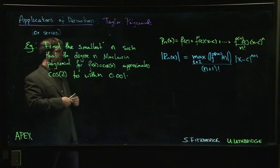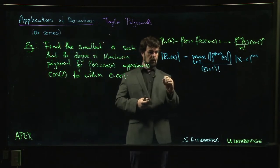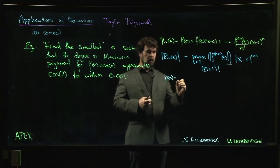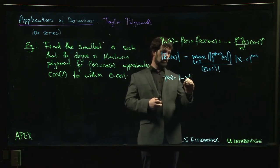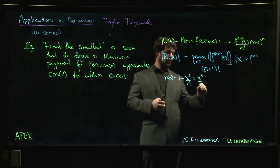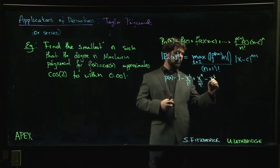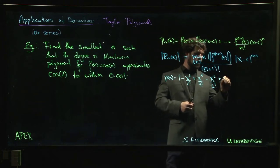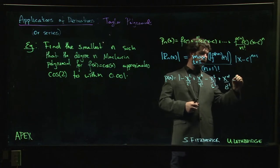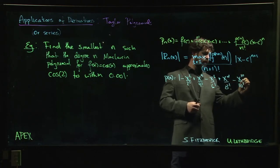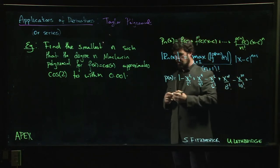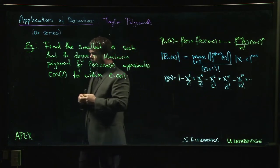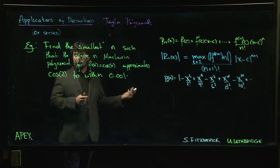So we know that our Maclaurin polynomial for cos, if you work through this example, it looks something like this: one minus x squared over 2 factorial plus x to the 4 over 4 factorial minus x to the 6 over 6 factorial plus x to the 8 over 8 factorial minus x to the 10 over 10 factorial and so on, depending on the degree.